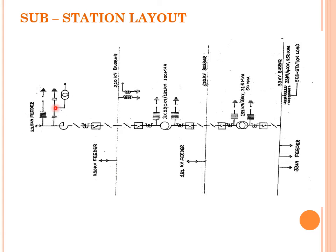First we see where circuit breakers are basically used. As all of you have done training at the nearest station, you have found this type of diagram — a single line diagram of a service station. Some generation is done, then that voltage is stepped up to 220 kV or something higher, then stepped down again to 220 kV, and further stepped down to 32 kV.